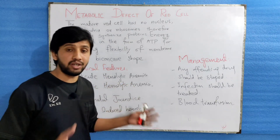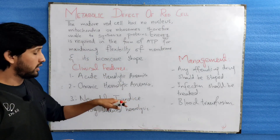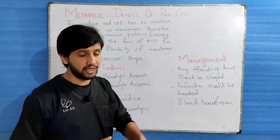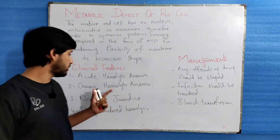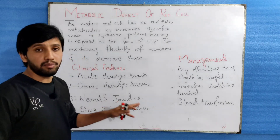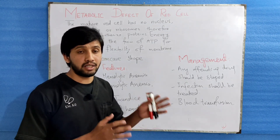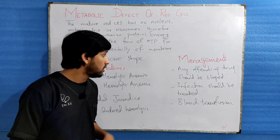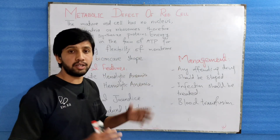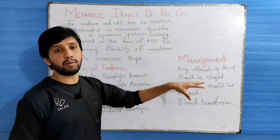The third clinical feature is neonatal jaundice. An infant born with glucose-6-phosphate dehydrogenase deficiency will develop neonatal jaundice. There are also certain drugs which induce hemolysis, such as aspirin, anti-malarial drugs, and certain analgesics. These are the clinical features of these patients.